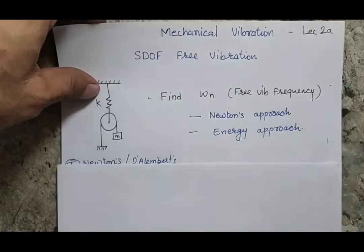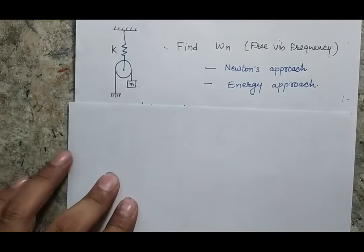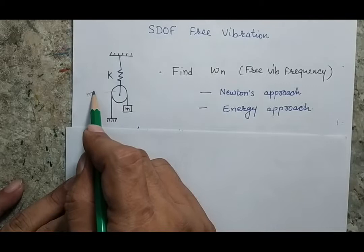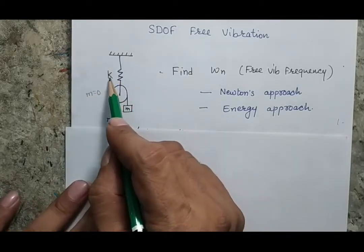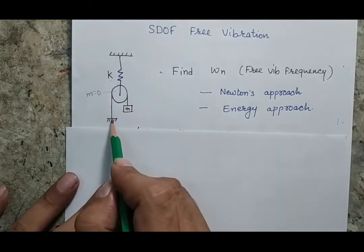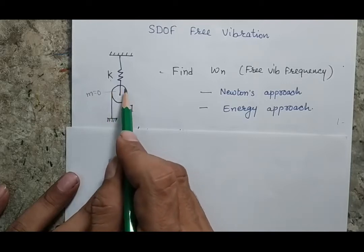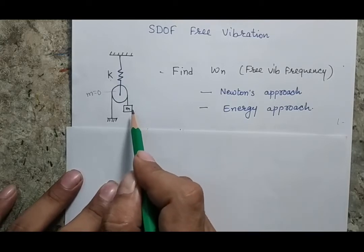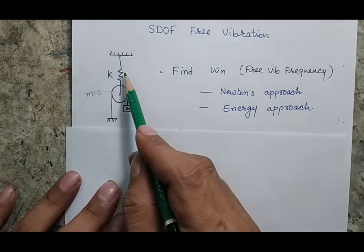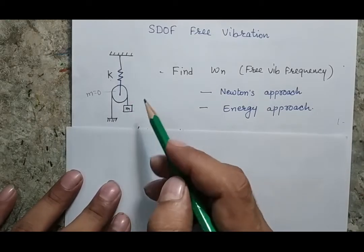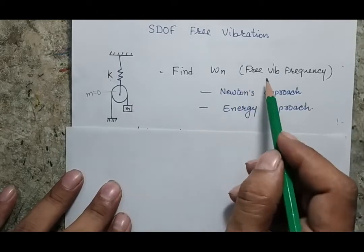I am showing one case where this is my system. There is a pulley which is massless, so the mass of the pulley is zero. There is a spring of stiffness K and a mass is suspended on this pulley. One end of the thread is fixed to the ground, passing over the pulley, and there is a mass. If I give a disturbance to this mass, because of the stiffness of this spring, this mass will oscillate and I have to find the natural frequency of that system.